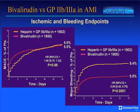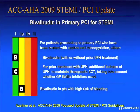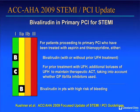Bivalirudin, a direct thrombin inhibitor, provided no benefit in the setting of fibrinolysis but, in the setting of primary PCI for ST elevation MI, provided equivalent protection against ischemic events compared to heparin plus 2b3a and about a 45% reduction in bleeding complications. The latest update includes bivalirudin as an option for patients undergoing primary PCI, and it is particularly favored in patients at high risk for bleeding.